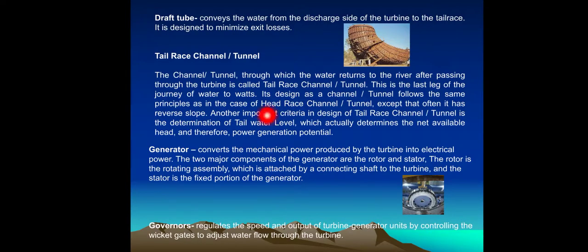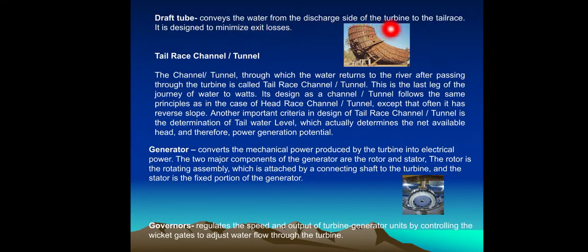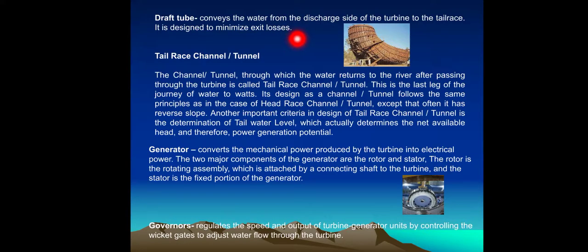Draft Tube: The draft tube conveys water from the discharge side of the turbine to the tailrace. It is designed to minimize exit losses.